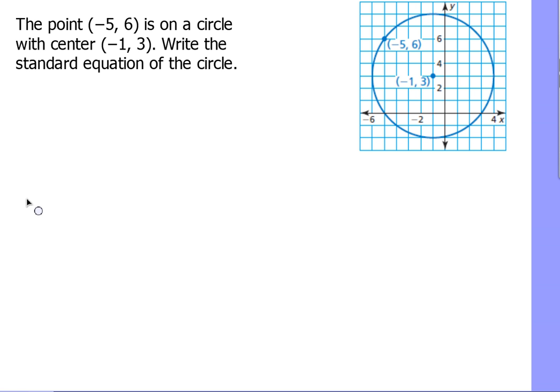So far, we've gotten to a point where we know what the standard equation of a circle is, and let's recap that first. X minus H quantity squared plus Y minus K quantity squared equals R squared.